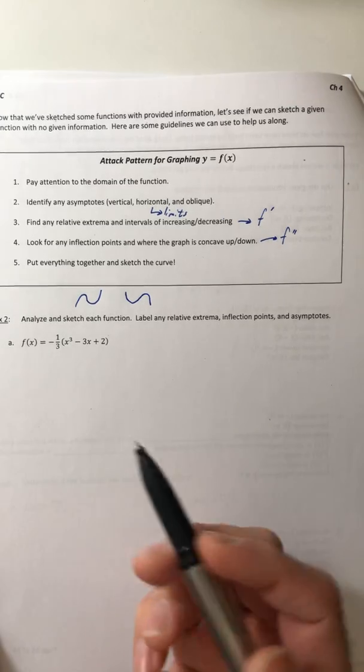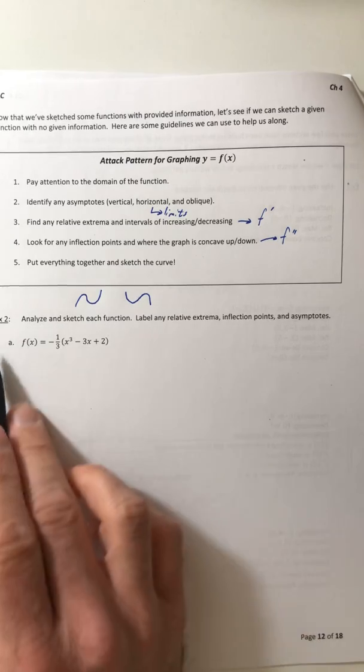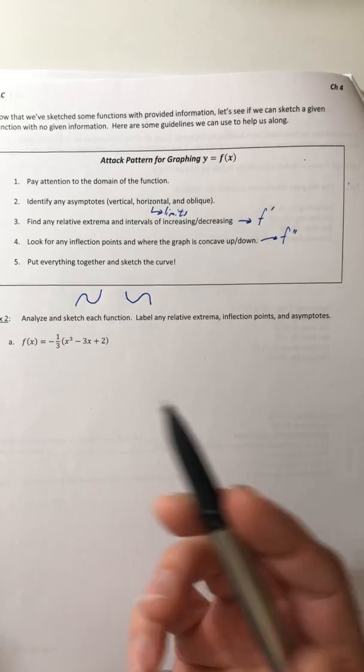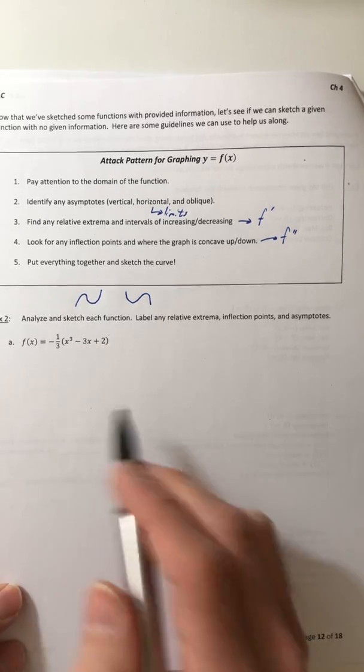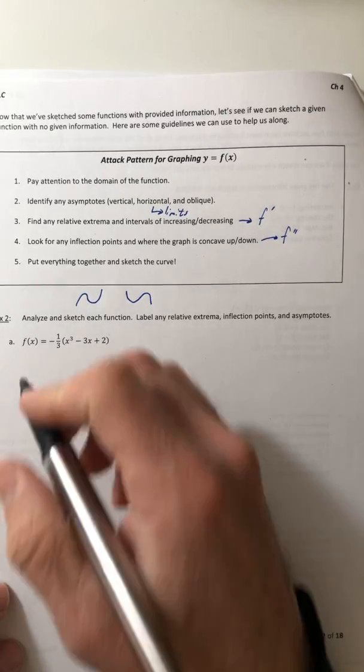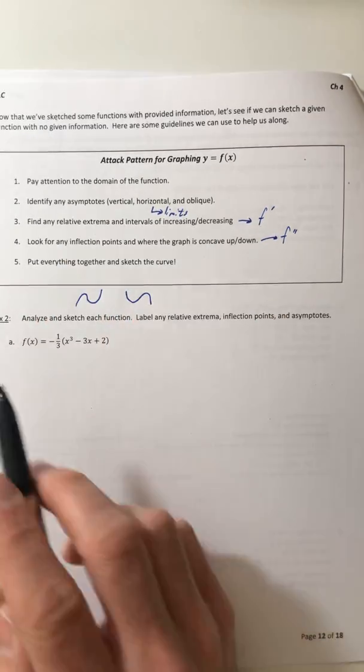So knowing your algebra two, or any intermediate algebra can help a lot with this type of stuff, because you have an idea as to what it looks like. And then when you analyze it, it'll tell you exactly where to put stuff. Okay, so the domain of this, all reals, no asymptotes.